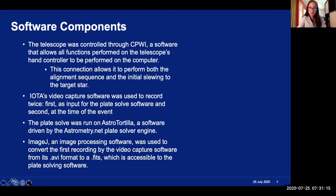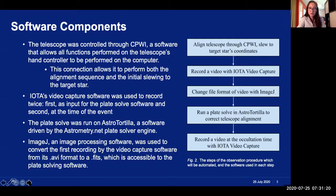So, the whole observation process can be condensed into five main steps which need to be addressed through automation. The first, in CPWI, the telescope is aligned and slews to the target star's coordinates. Then, a short recording is taken. Third, the recording is converted from a .avi format to a FITS format. And, fourth, the new image is given as input to a plate solve, which corrects the telescope's alignment. And then, finally, the normal recording is taken at the event time.